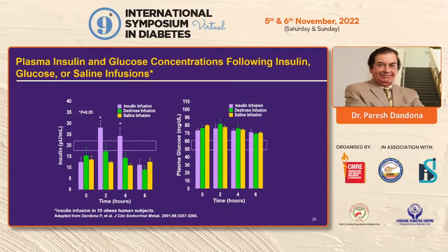The same sort of experiment was tried in humans in vivo. For this experiment and publication we received a prize from the Endocrine Society. Insulin was infused in obese insulin-resistant people, building up insulin concentration over 4 hours and then stopping, while glucose concentrations were maintained constant throughout.